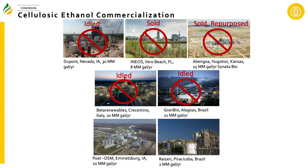Seven refineries have been built to convert cellulosic biomass into biofuels. Of those seven, five have either been sold, repurposed, or idled. Now there's only one cellulosic ethanol plant left running in the United States, and one very small plant in Brazil.